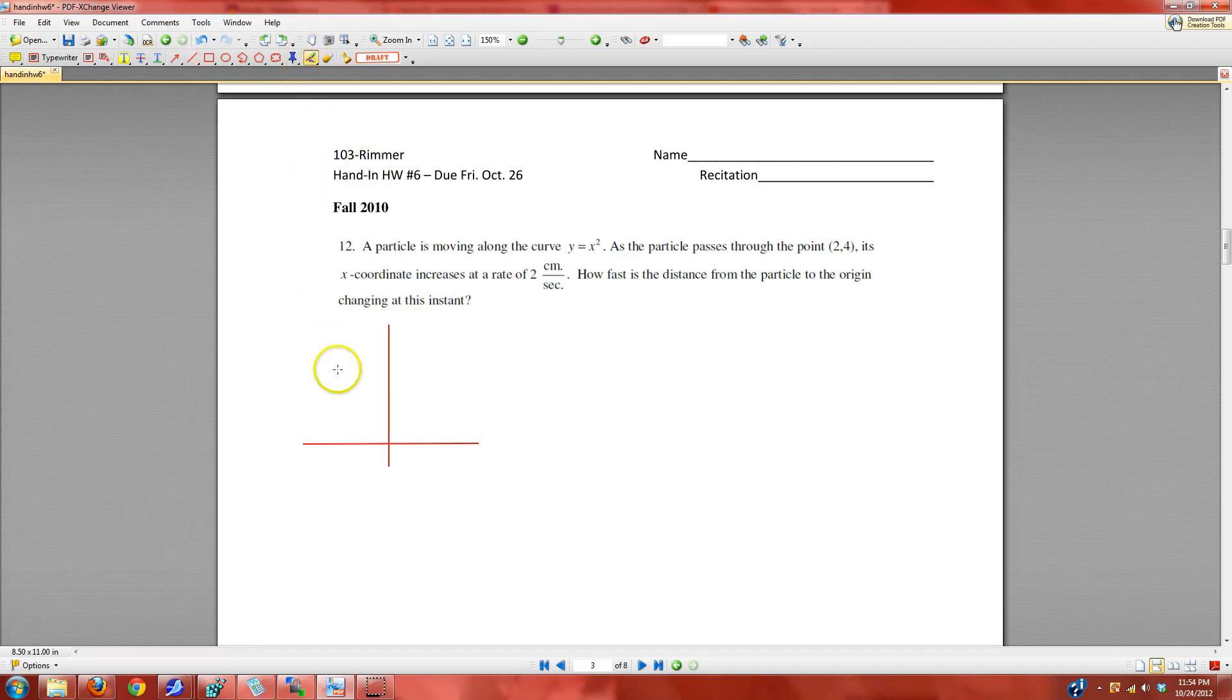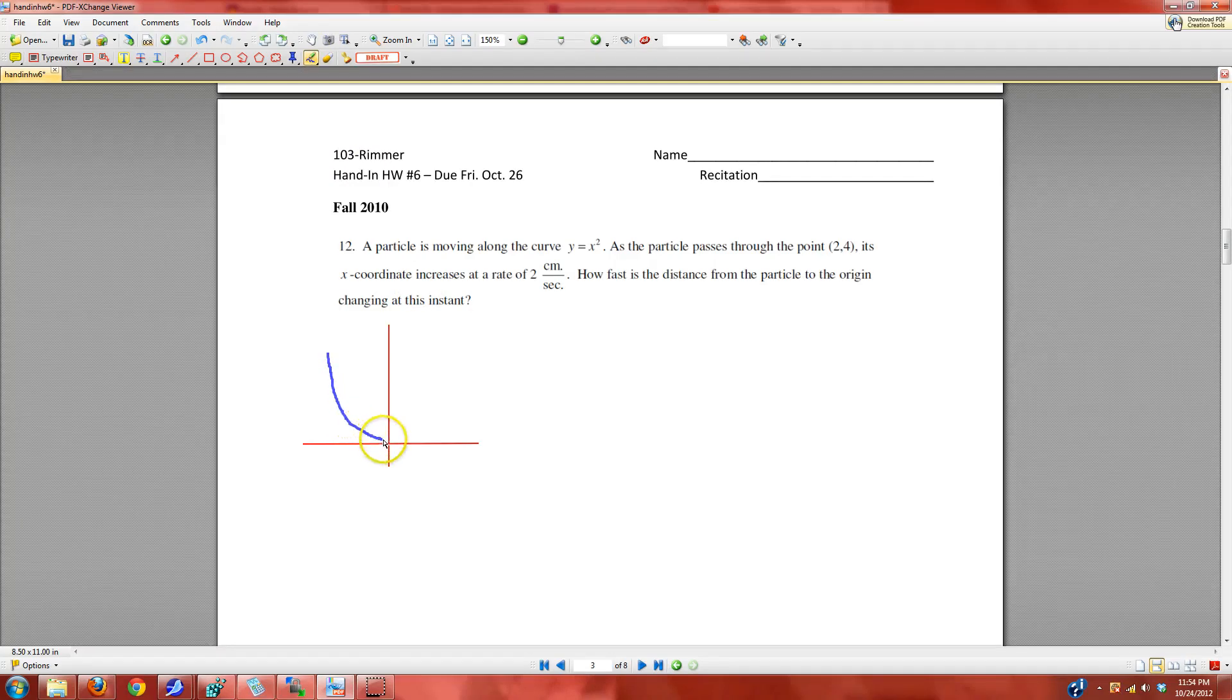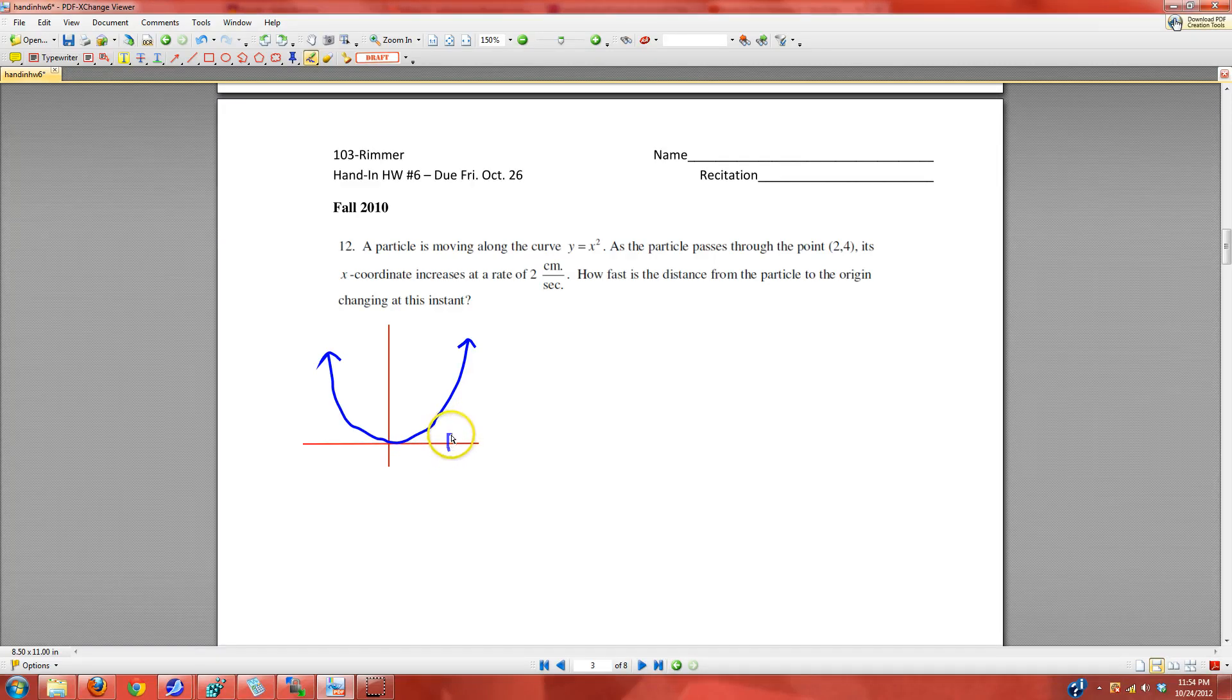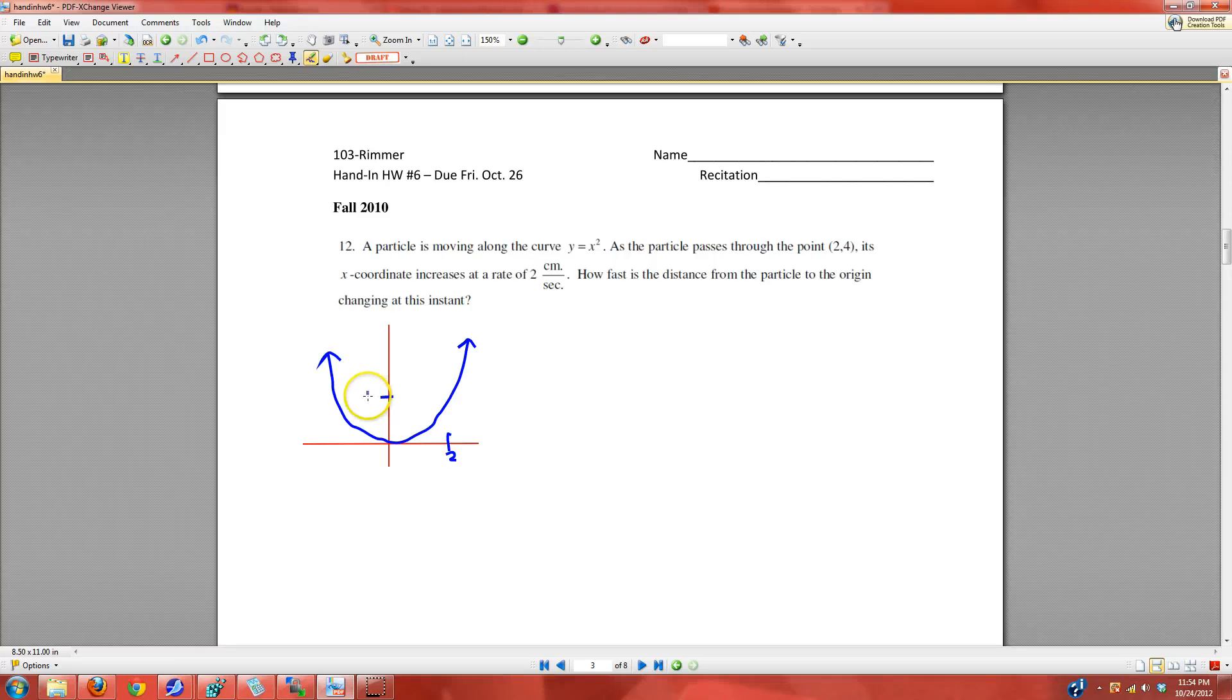Let's just draw it like this. Once the particle is moving along this curve, there's a point on the curve we're interested in. That point is when x is 2 and y is 4. So when x is 2, let's just call this 4, that's a point that's on the curve.